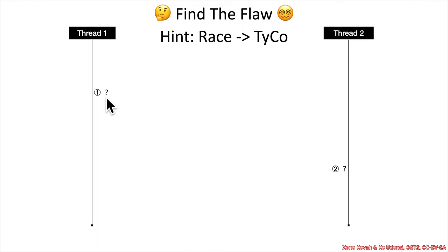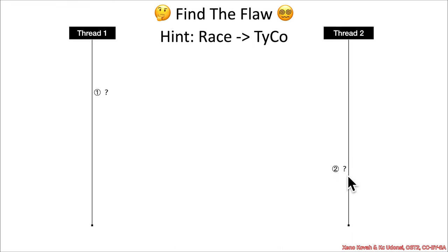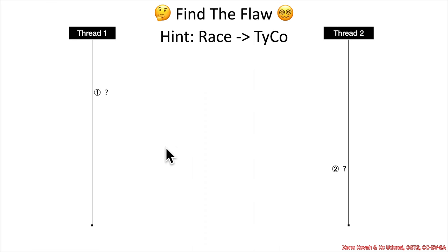As an extra hint: this is a race condition vulnerability, so thread one is doing something. You need to figure out which function it's in, where exactly that function gets preempted, and what attacker-controlled operation on another thread would cause something bad to happen when context switches back to thread one — leaving it in a type-confused state. Go figure out what thread one and thread two are doing and where the confusion opportunity occurs.